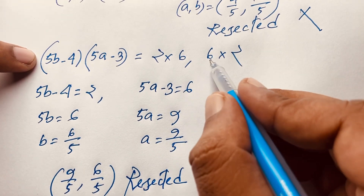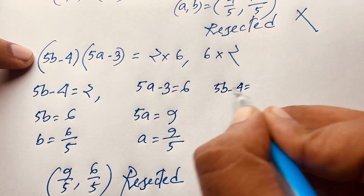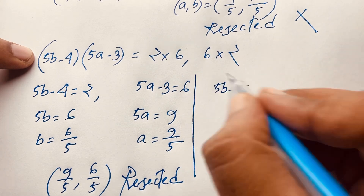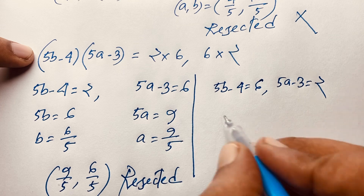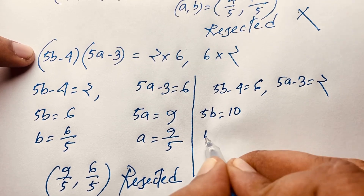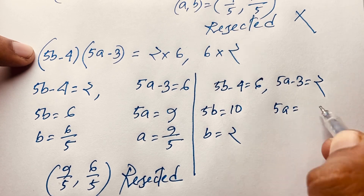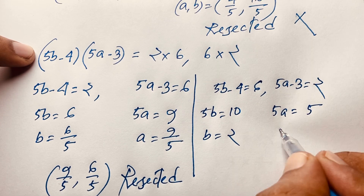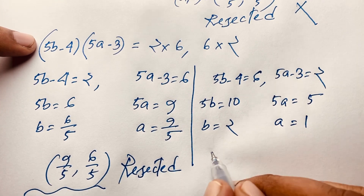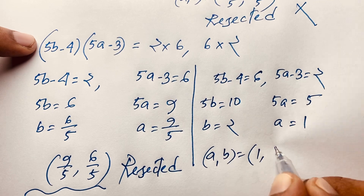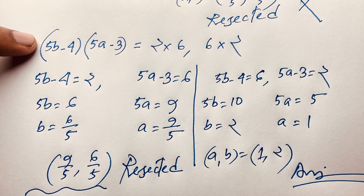Case 2b: 5B minus 4 equals 6 and 5A minus 3 equals 2. Then 5B equals 10, so B equals 2. And 5A equals 5, so A equals 1. So (A, B) = (1, 2). This is a valid answer since both are positive integers.